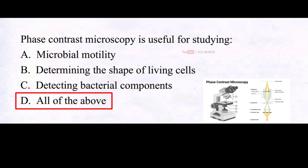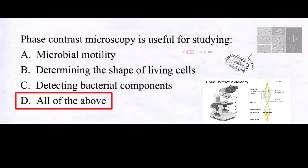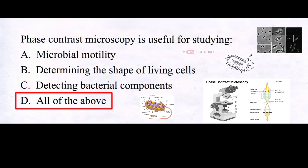Phase contrast microscopy is a versatile tool. It helps visualize microbial movement, identify living cell shapes, and spot bacterial components like endospores and inclusion bodies. This technique enables us to study a wide range of microscopic details in biology.